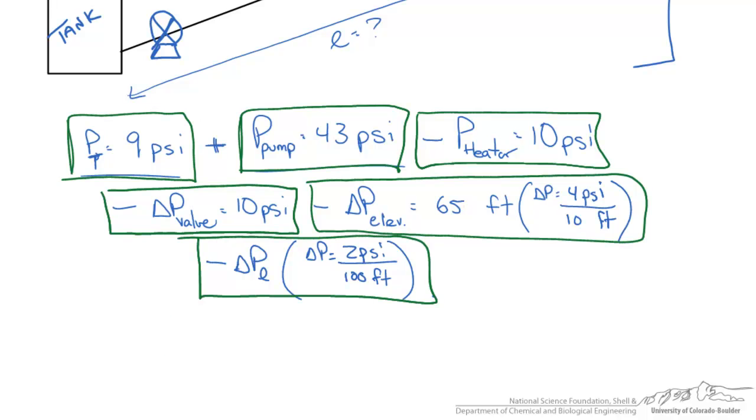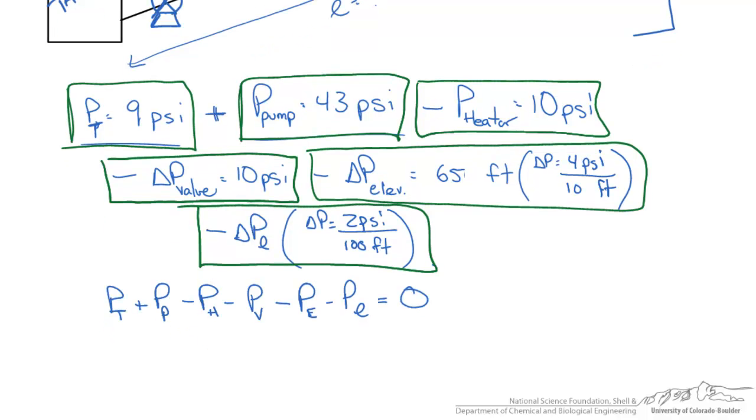A simplified form of this equation looks like the following, where we have the initial pressure in the tank plus the pressure produced by the pump, and we're subtracting out the pressure of the heater as well as all of the pressures due to losses.